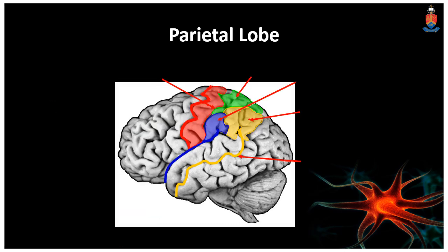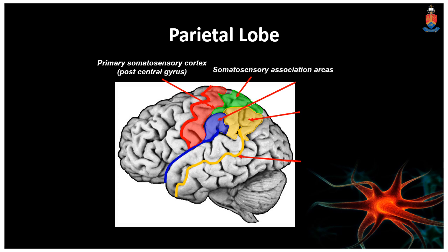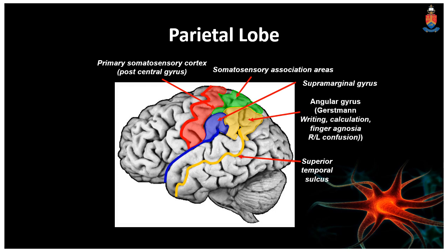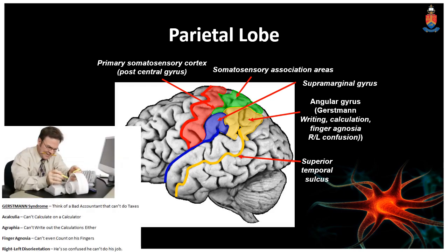Moving on to the parietal lobe: just behind the central sulcus is the primary somatosensory cortex, located at the postcentral gyrus. This is preceded by the somatosensory association areas. Here we can appreciate the supramarginal gyrus, and at the top of the superior temporal sulcus is the angular gyrus, which is associated with lesions collectively called Gerstmann syndrome, with problems in writing, calculation, finger agnosia, and right-to-left disorientation. Although some authors associate this syndrome with the nearby supramarginal gyrus, I will get into this much later on.